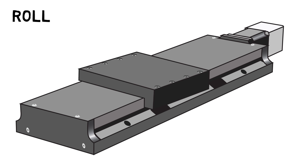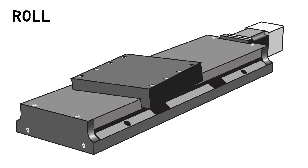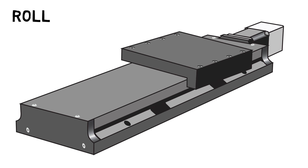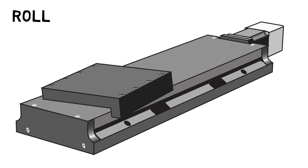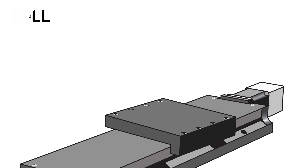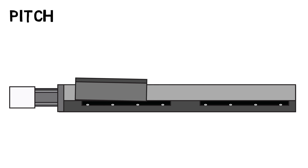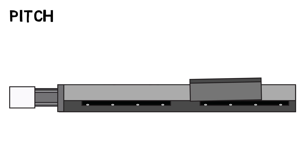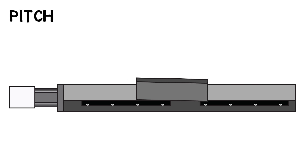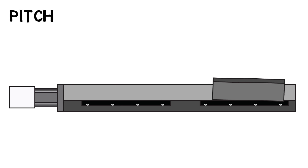Roll is a rotation around an axis in the horizontal plane parallel to the direction of travel. Yaw is a rotation around an axis in the vertical plane perpendicular to the direction of travel.